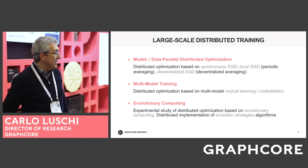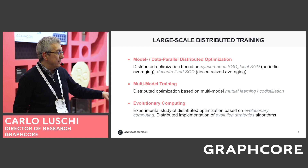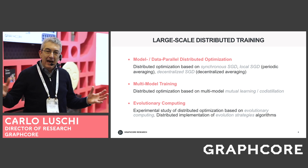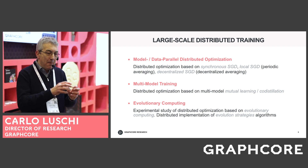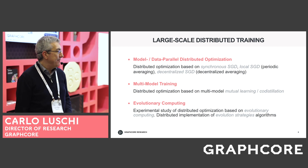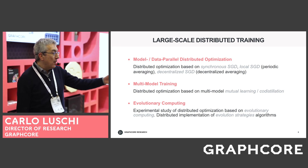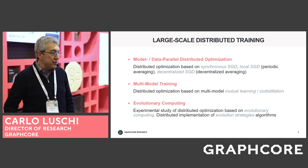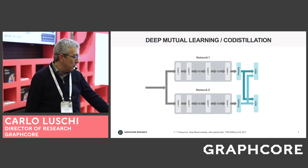We are addressing this saturation problem with several possible strategies. One is multi-model training: instead of training a single large over-parameterized model, we try to optimize many smaller models in parallel. The other strategy relies on evolutionary computing, which is in itself very efficient for parallelizing training over multiple workers.